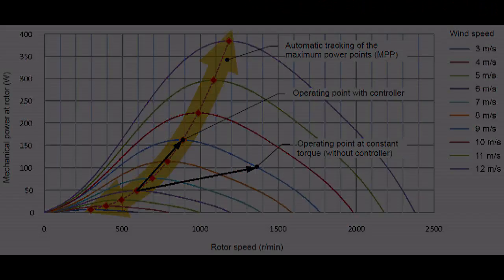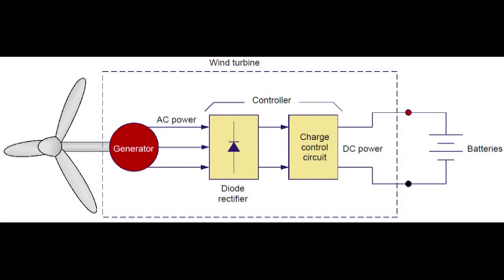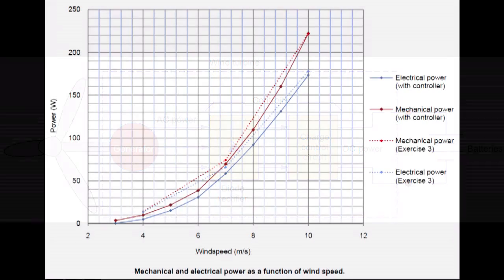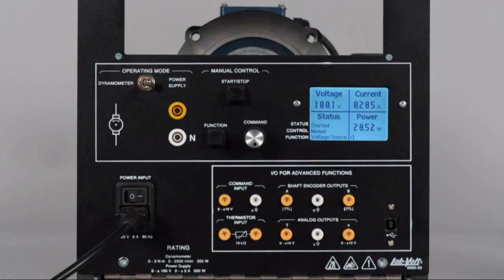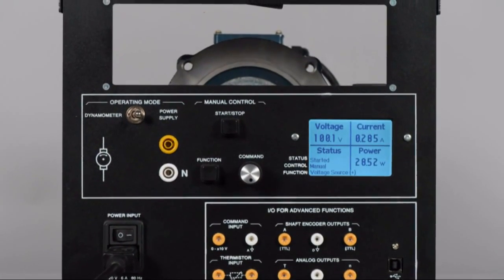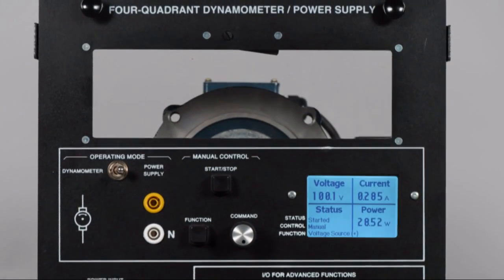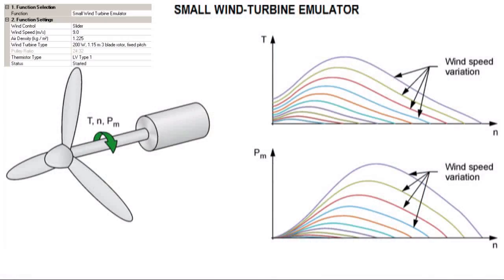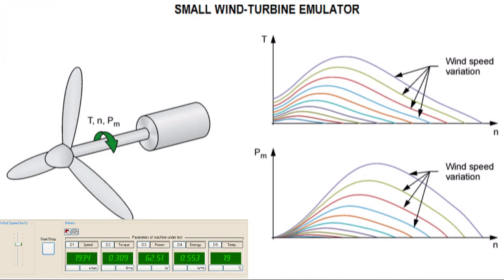These topics are common to both small wind and large wind. The next exercise was designed especially for small wind and deals with storing energy from a wind turbine into batteries. To drive the wind turbine generator, a computer-assisted special prime mover faithfully reproduces the torque and speed characteristics of various wind speeds and air densities.